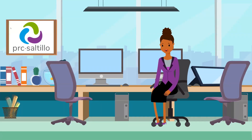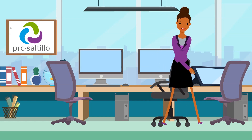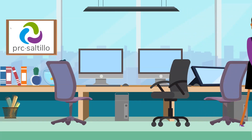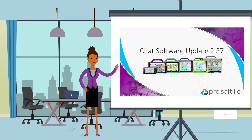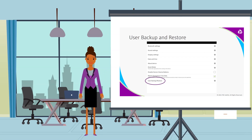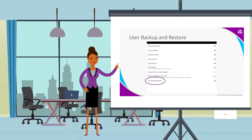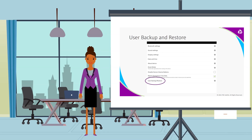The Chat software update 2.37 is now available. There are a few new features we want to highlight for you. First, we are excited to introduce the user backup and restore feature. This feature allows you to save user settings like customized vocabularies, button timing settings, pronunciations, profiles, and more.